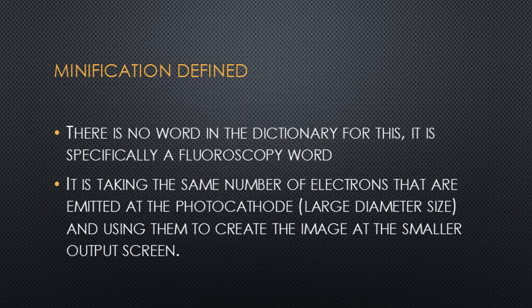Minification is interesting — there's actually no word in the dictionary for it, but it causes the image to be brighter because there's the same number of electrons producing the image. Most image intensifiers have diameters of 6, 9, or 12 inches, and output screens are about 1 inch. These diameters are usually stated in centimeters: a 6-inch screen is 15 centimeters, a 12-inch screen is 30 centimeters, and output screens are 2.5 centimeters.